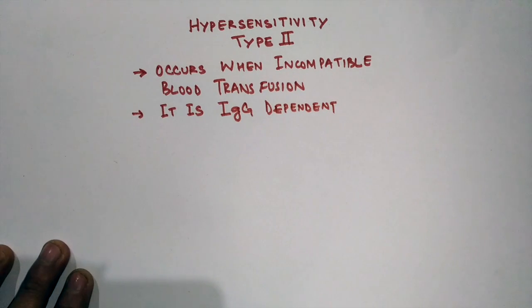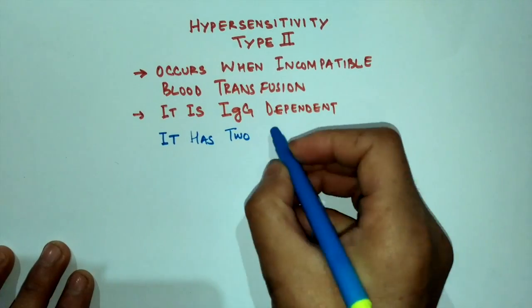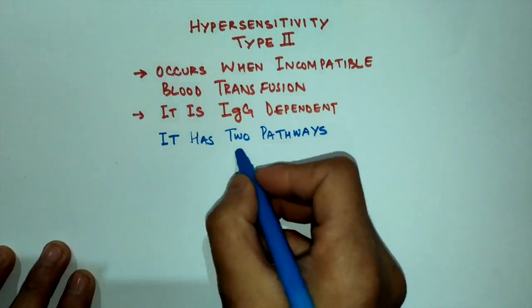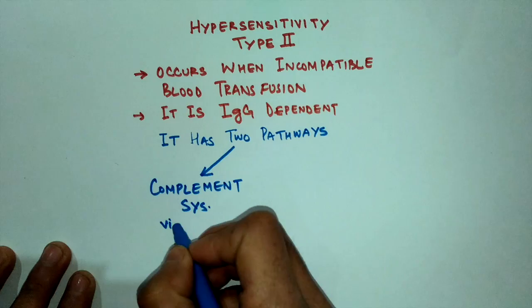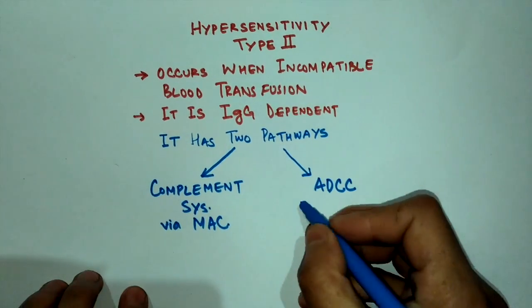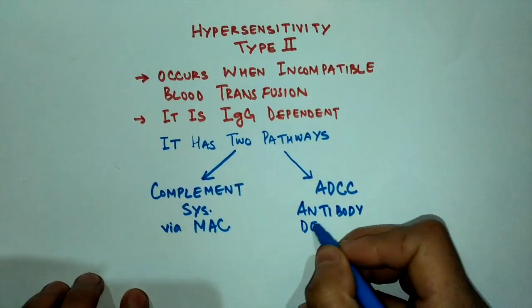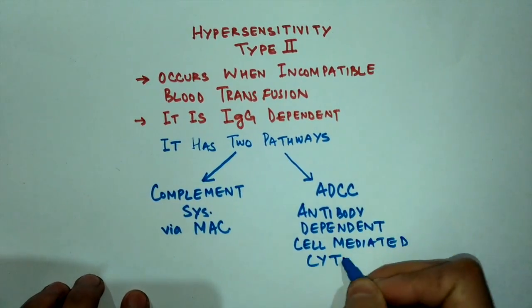Hypersensitivity type 2 has two pathways: the complement system via MAC, that is the membrane attack complex, and ADCC, which stands for antibody-dependent cell-mediated cytotoxicity.